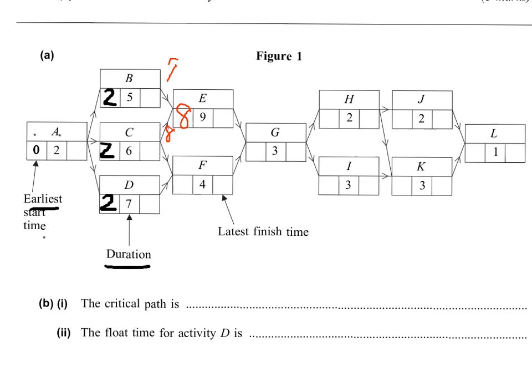So if two arrows are going into one activity, you need to choose the bigger one. Going from left to right, choose the bigger number.